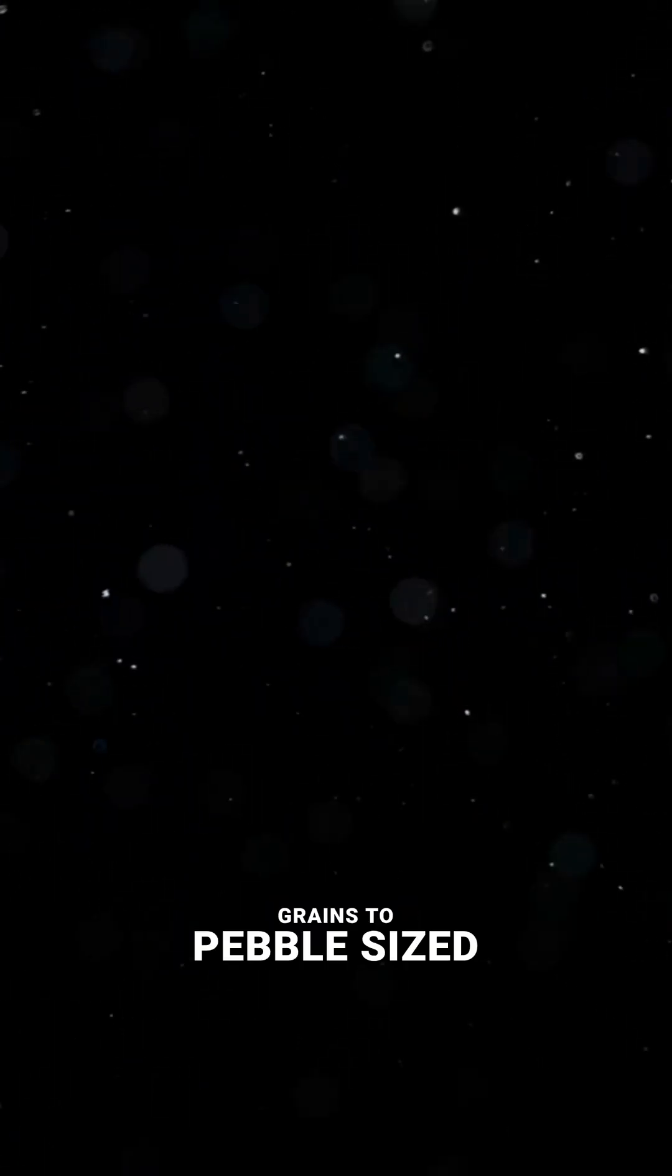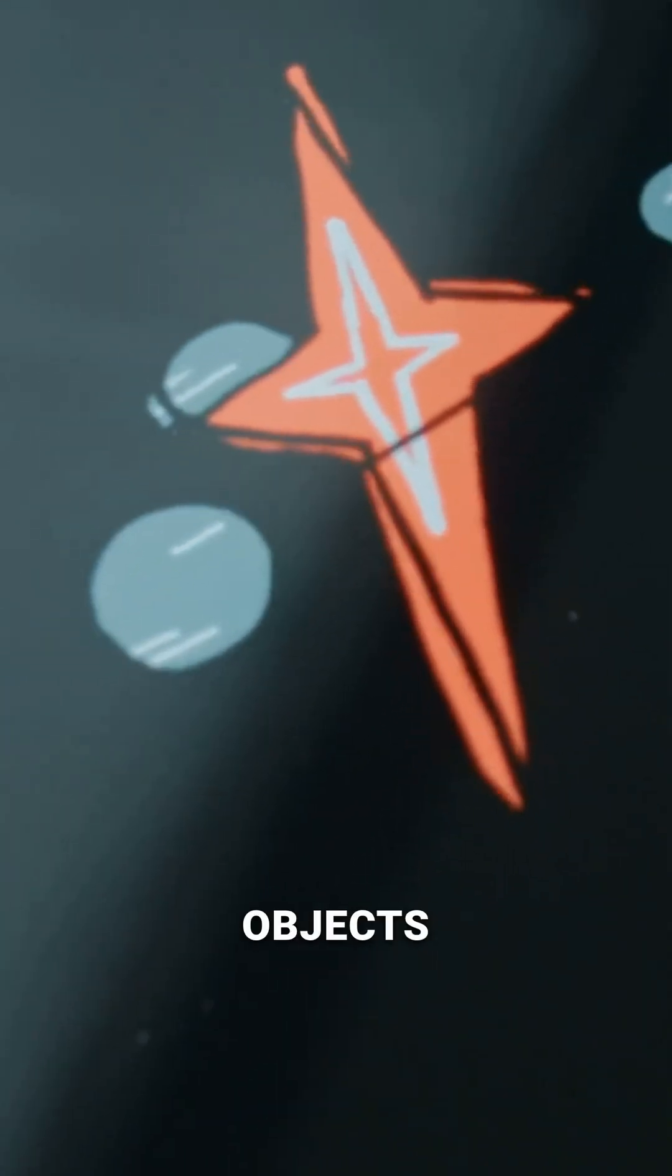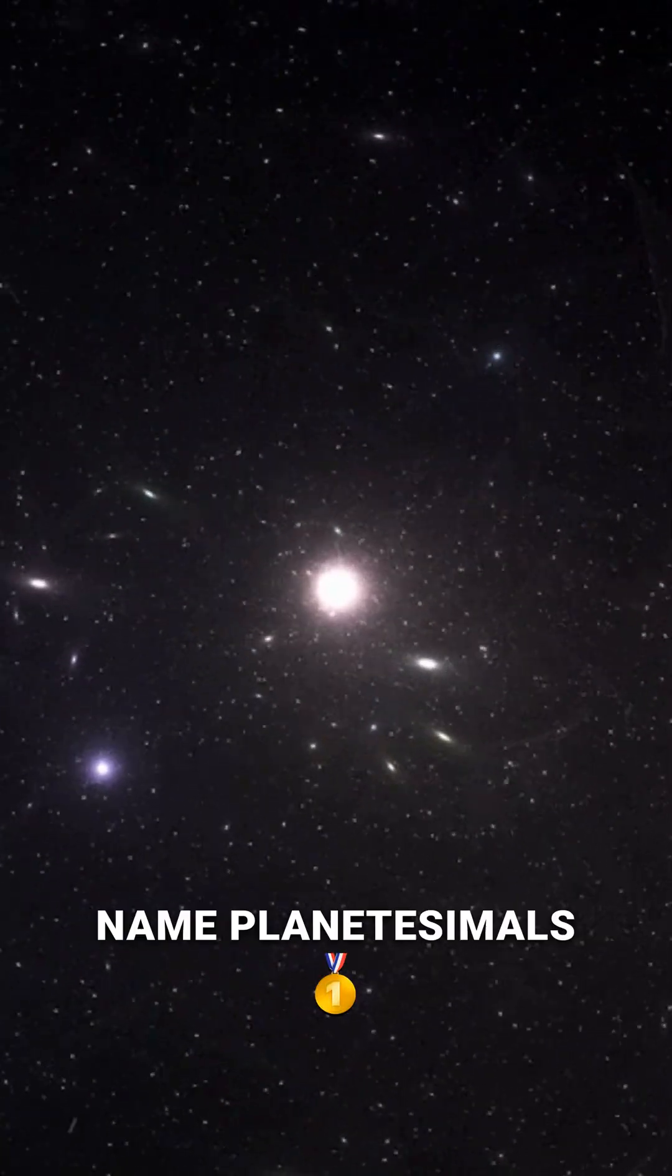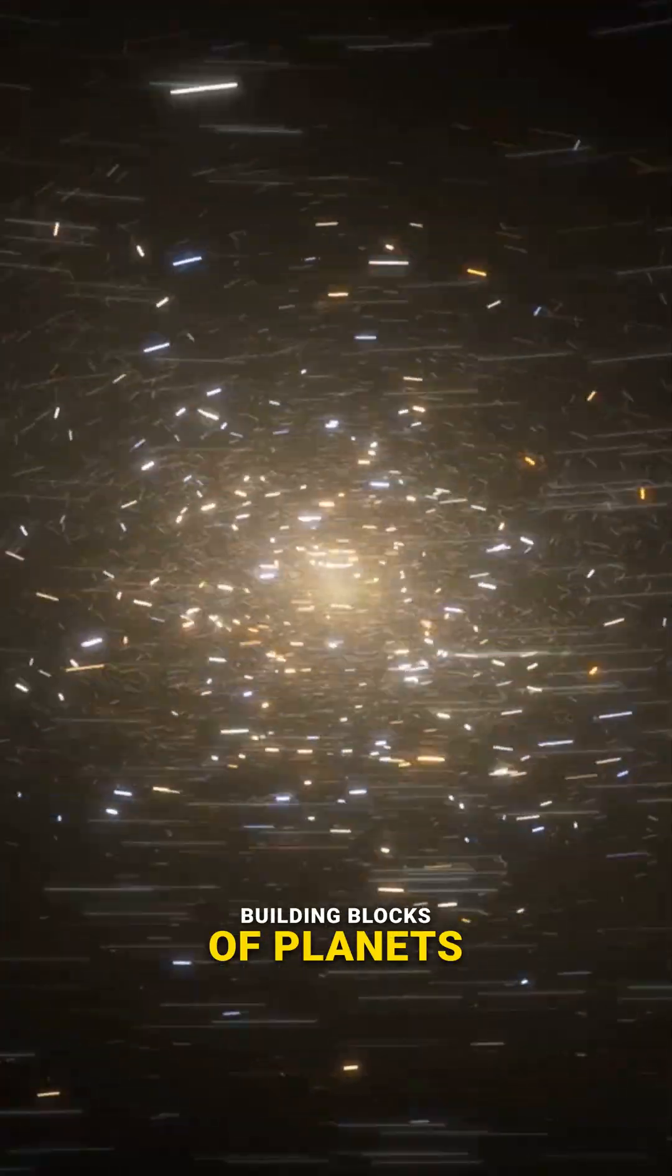You go from dust grains to pebble-sized clumps, then to boulder-sized objects. When these objects get to be about a kilometer wide, they get a special name: planetesimals. These are the true building blocks of planets.